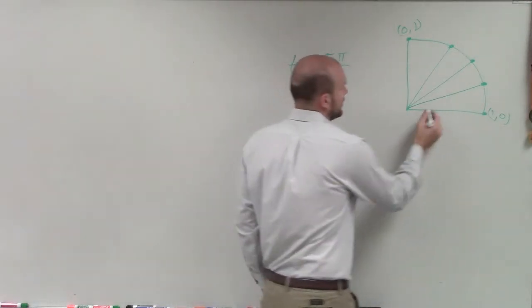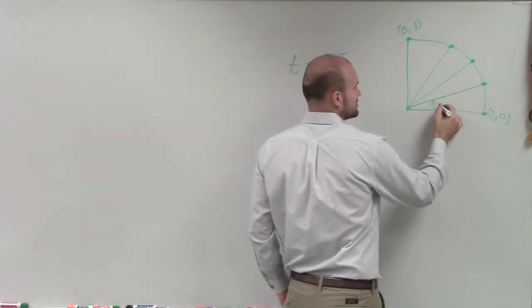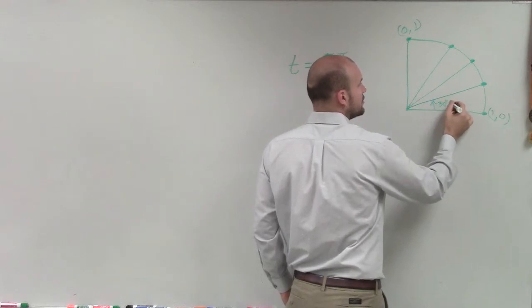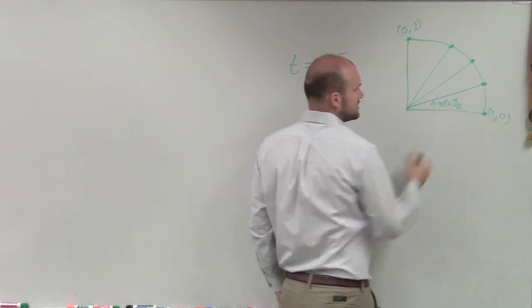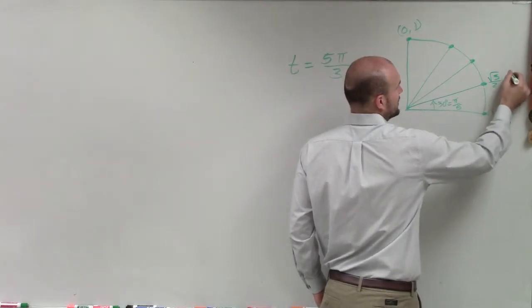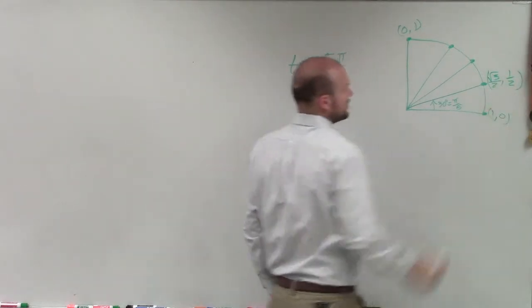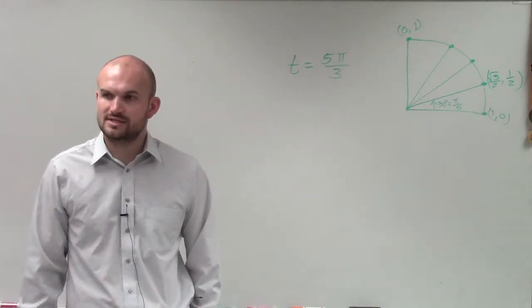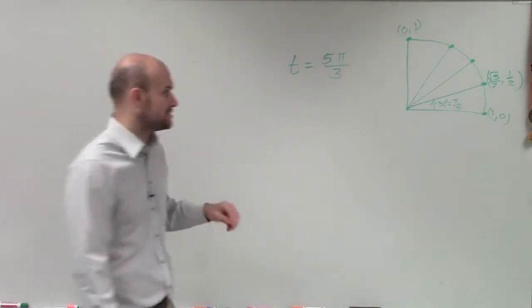And then the first one is at what we'll call 30 degrees, which is still the same thing as π over 6. And that angle, coordinate point on the unit circle, is square root of 3 over 2 comma 1 half. That's the x and y coordinates at 30 degrees for the point on the unit circle.